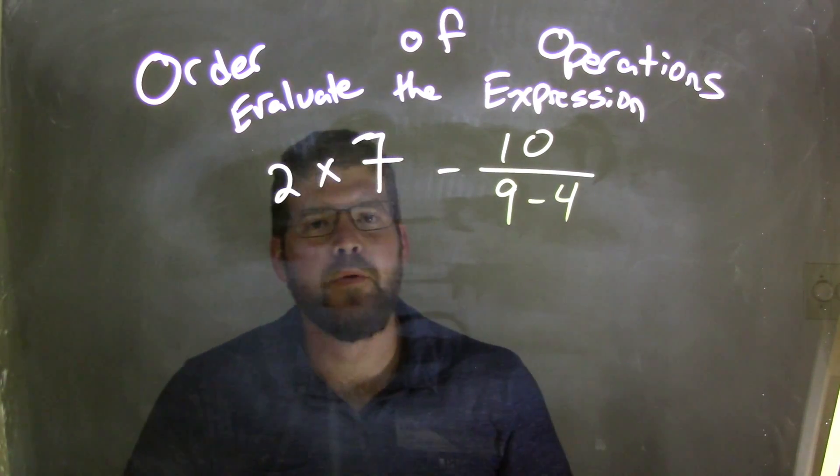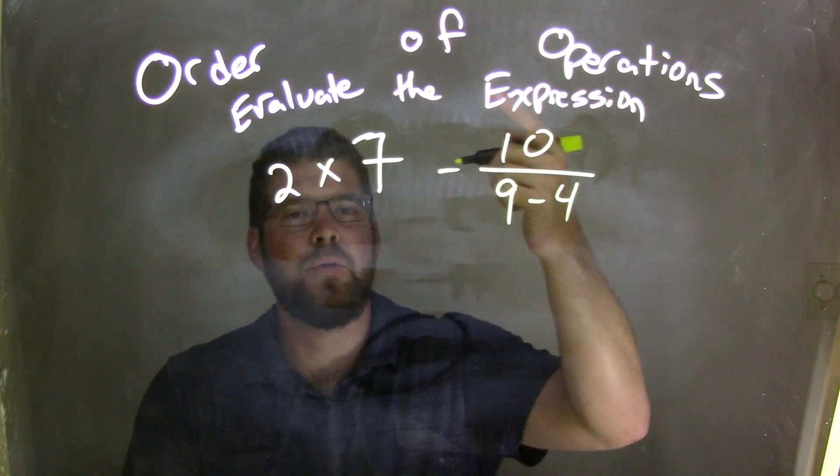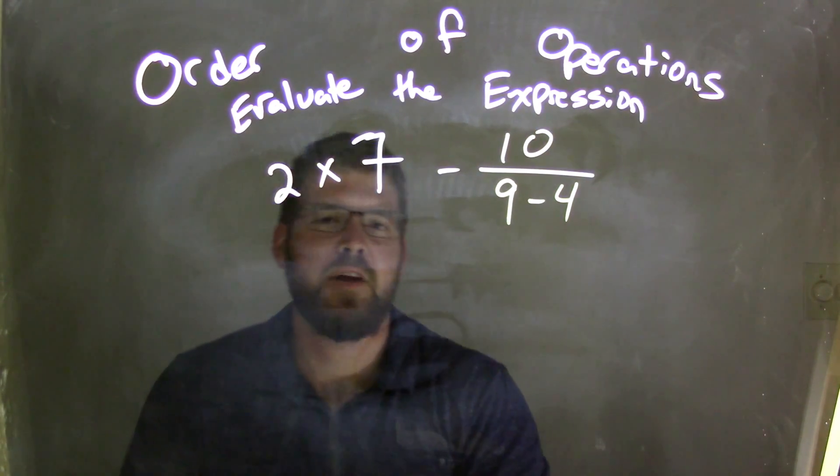Well, my order of operations says I have the fractions here. I can simplify the denominator, and the top of the numerator is simplified to another simplified, and the multiplication here.